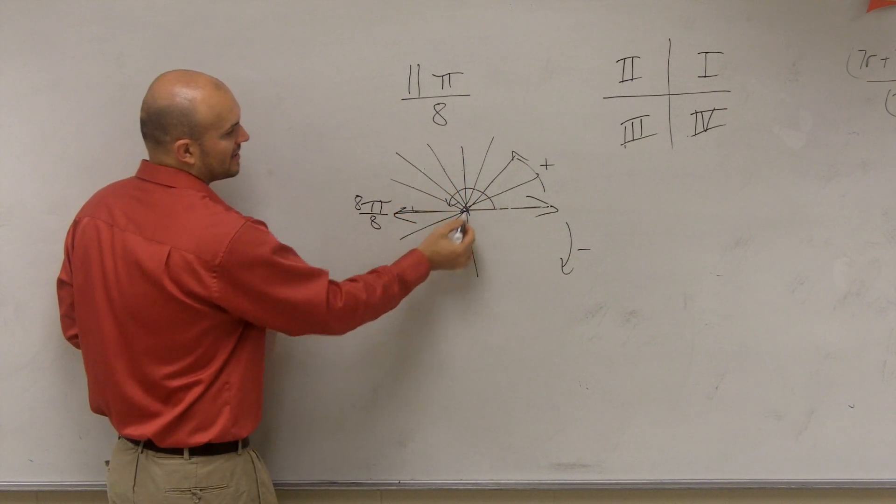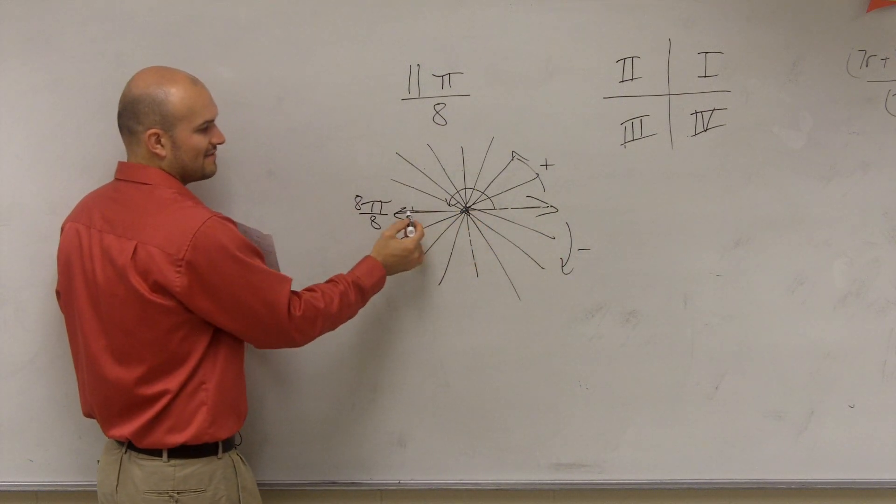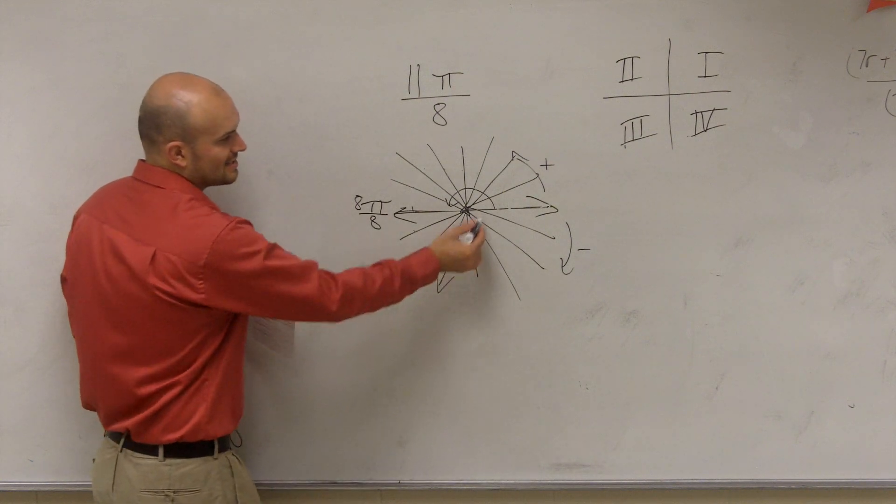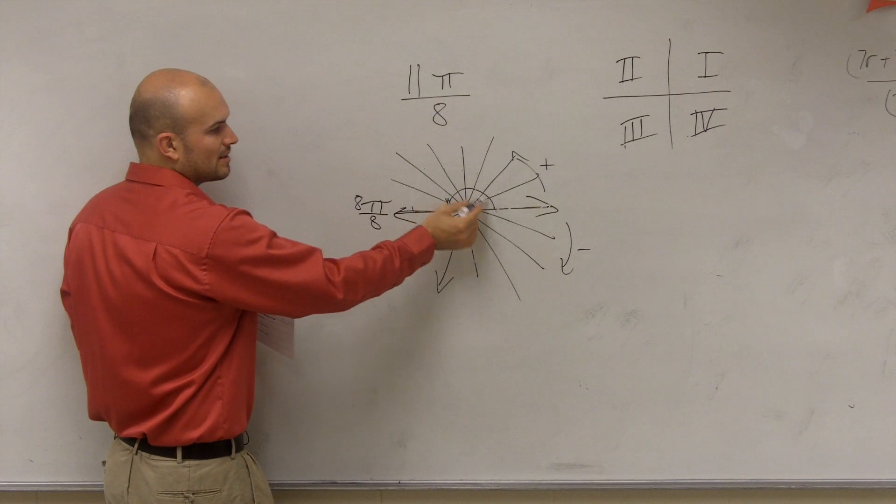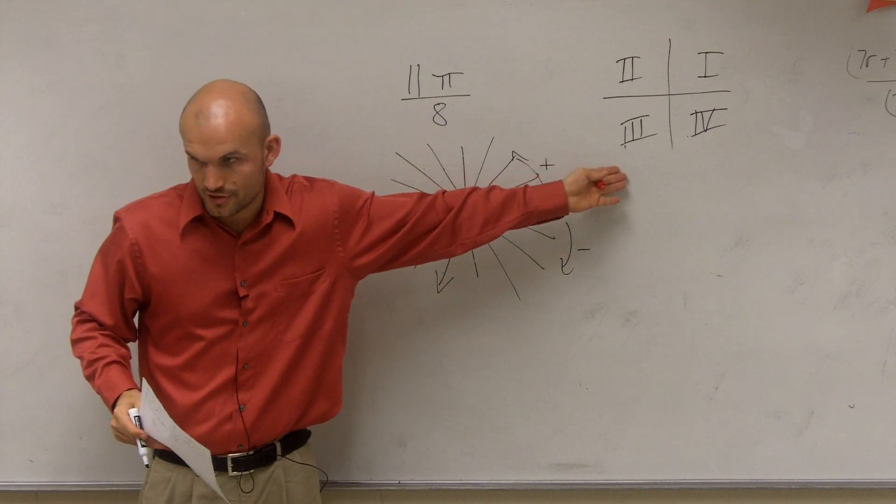So if I break this one into 8's, then if I have 8, 9, 10, 11. Well, which quadrant is that angle? So that means my angle goes all the way to here. So the angle is from my initial side to my terminal side is going to end up in the third quadrant.